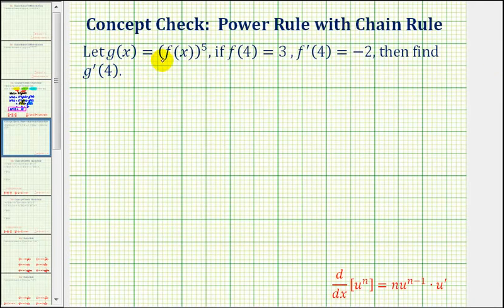We're told to let g of x equal f of x raised to the fifth power, and then if f of four equals three, and f prime of four equals negative two, we want to find g prime of four.